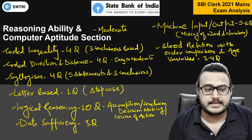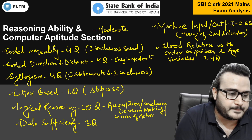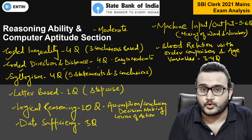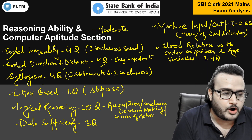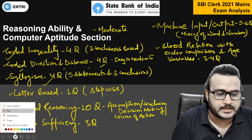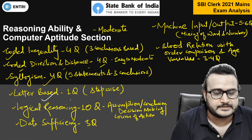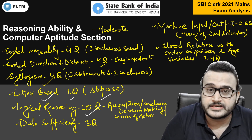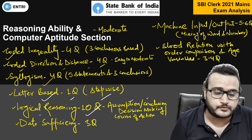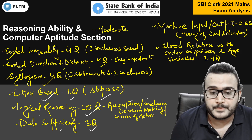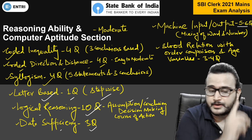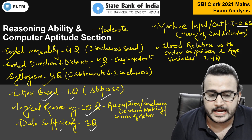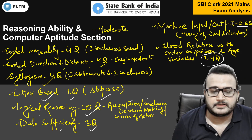Talking about the reasoning ability section — overall the section was moderate to difficult. Coded inequality: 4 questions. 3 conclusion based, coded direction and distance based. Direction and distance coded — basically 4 questions, easy to moderate. Syllogisms — 4 questions, 5 statements and 3 conclusions in the examination. Letter based — 1 question, step-wise, some steps were given. Logical reasoning — 10 questions from assumption, conclusion, decision making, course of action. Data sufficiency — 3 questions. Machine input output — 5 to 6 questions, mixing of word and number were given. Blood relation with order ranking or order comparison based — age was the variable. This kind of puzzle — 3 to 4 questions.